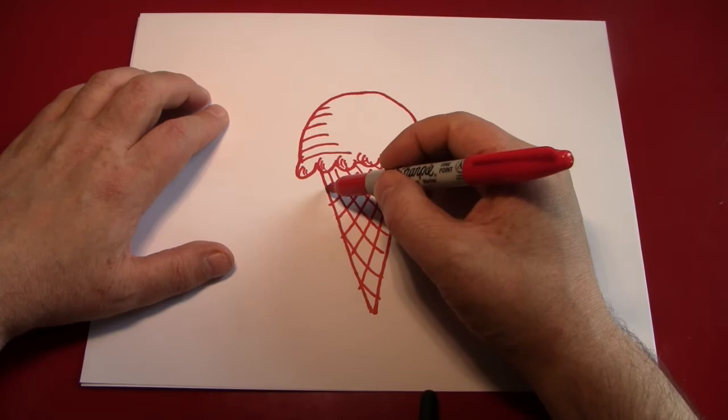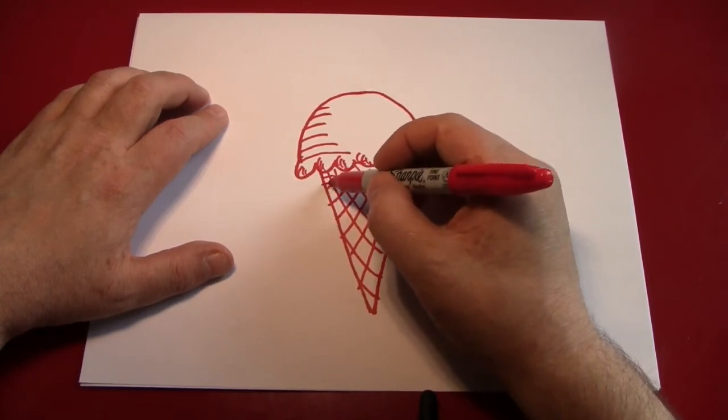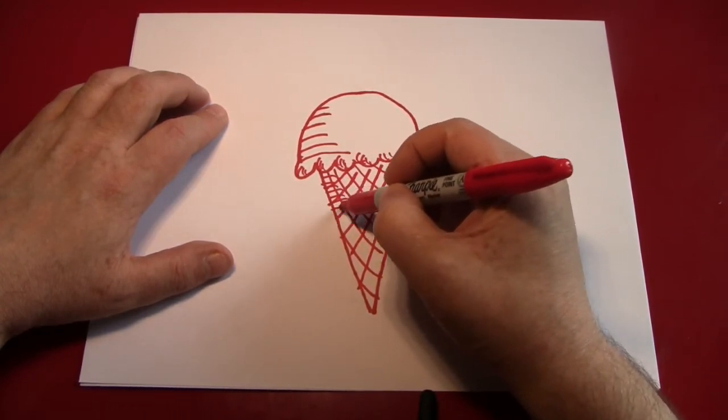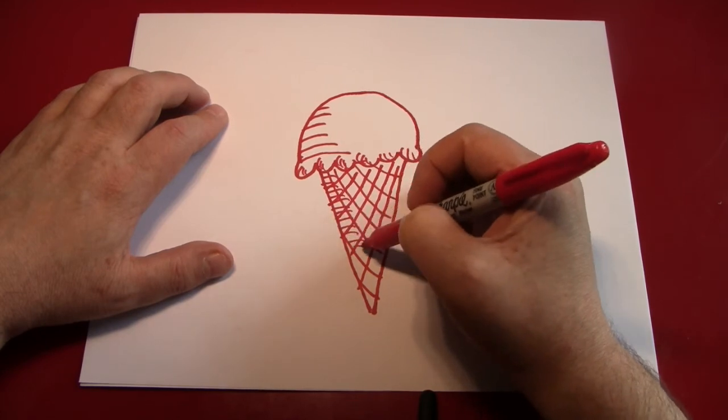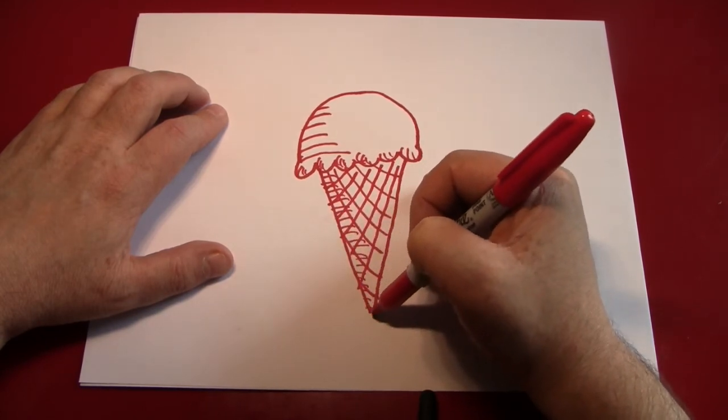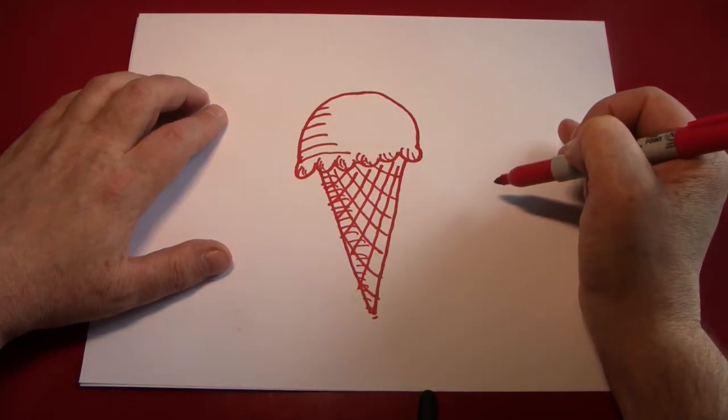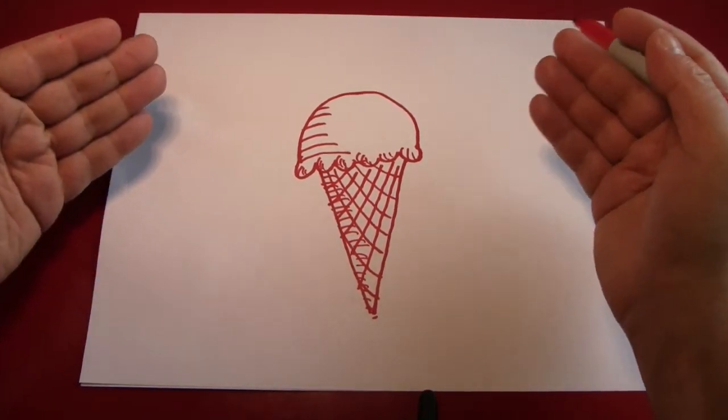Next we're going to put some shadowing on the cone itself to give it a little bit of depth also. And there you are. It's an ice cream cone.